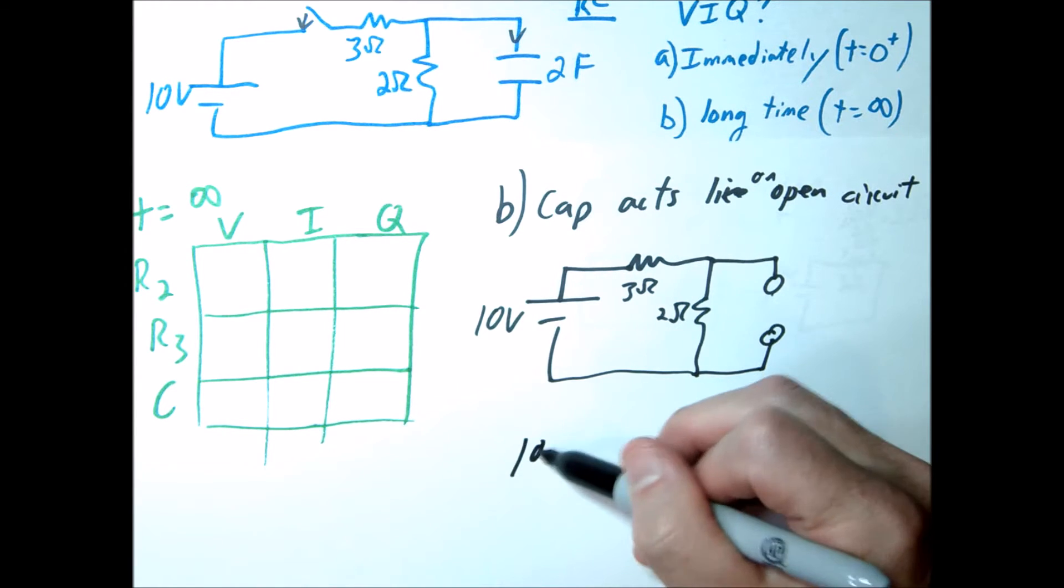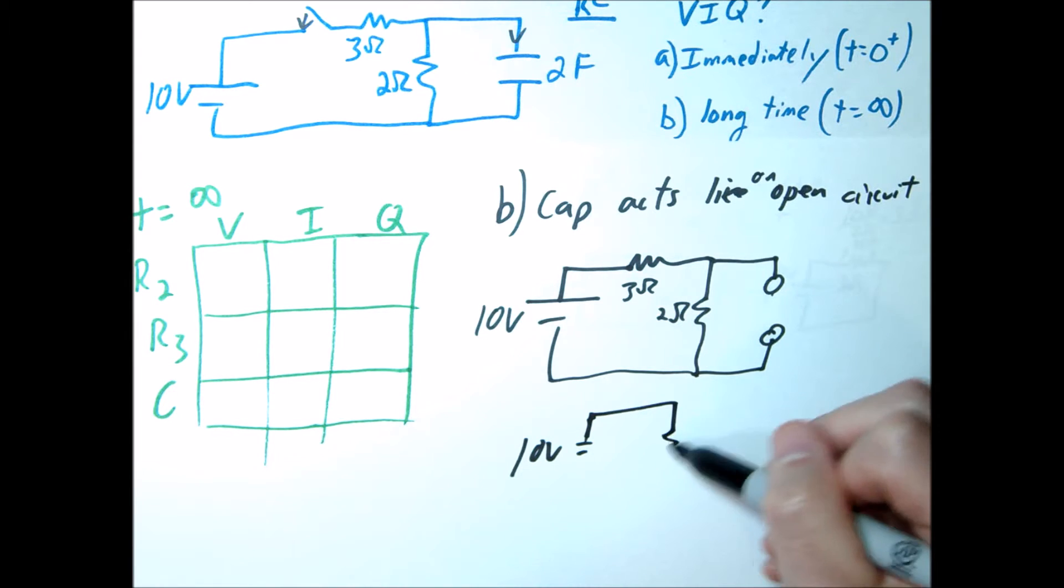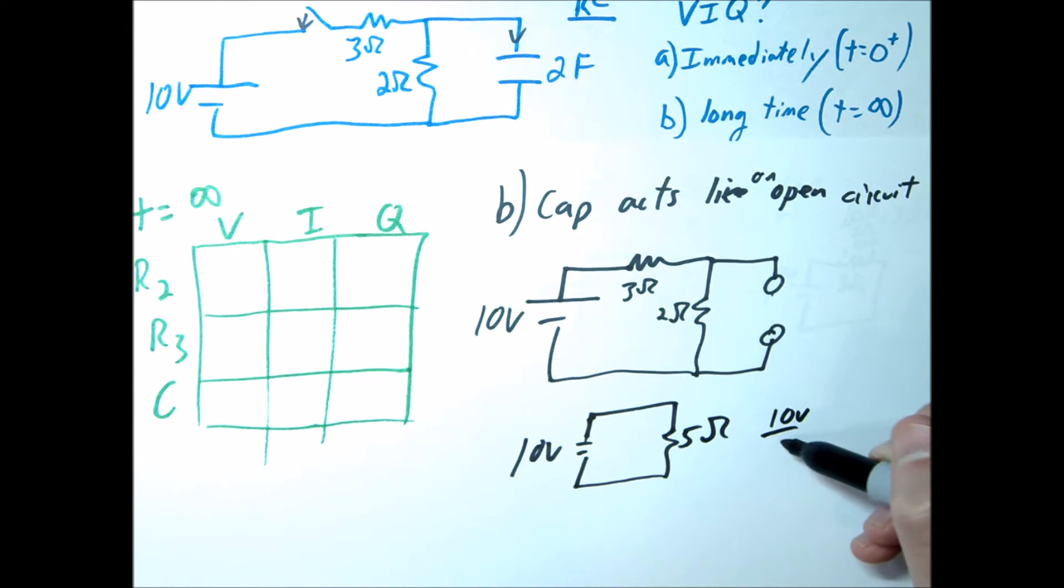And so you would just go ahead and solve this circuit as you normally do. We're just going to draw the equivalent for this in series. This is just going to be 5 ohms, which tells us 10 volts over 5 ohms is going to give us 2 amps.